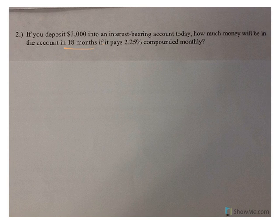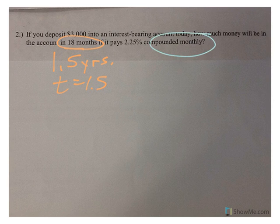Okay, well, here's the thing. 18 months, well, that's 1.5 years. So, T is 1.5. That's important, because in our compounding formula, T is always represented by the number of years, and we're compounding monthly, which means N is 12.